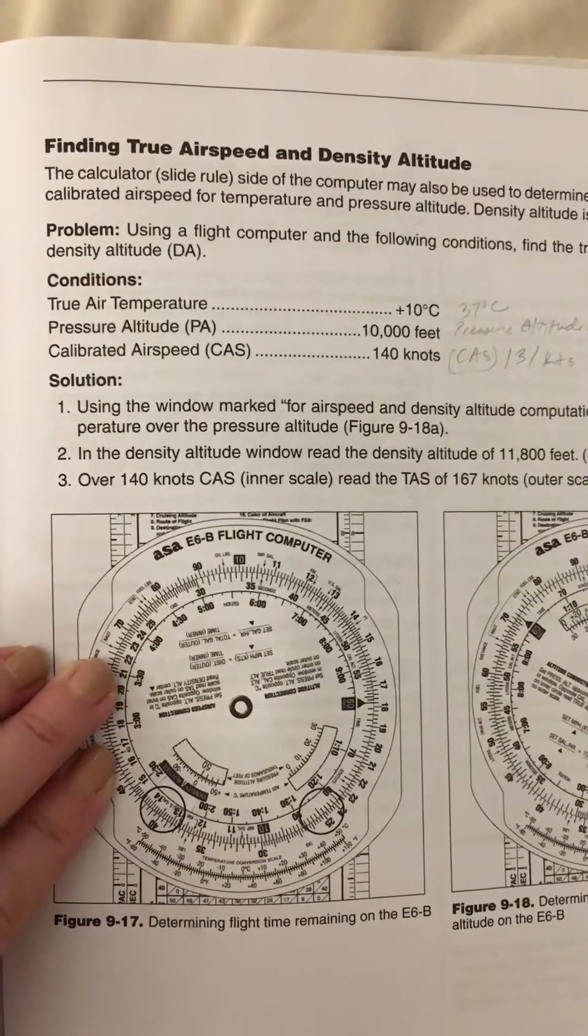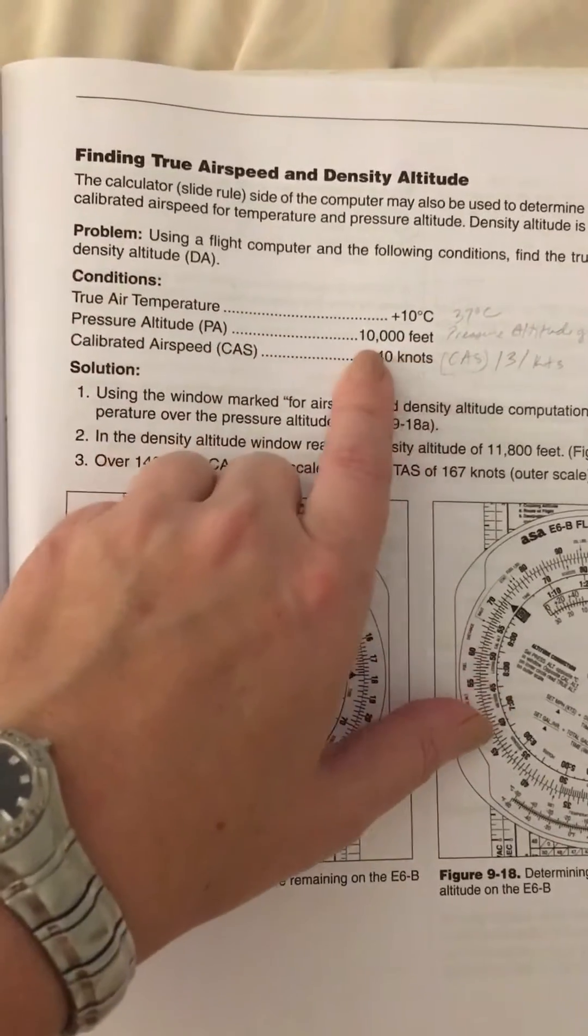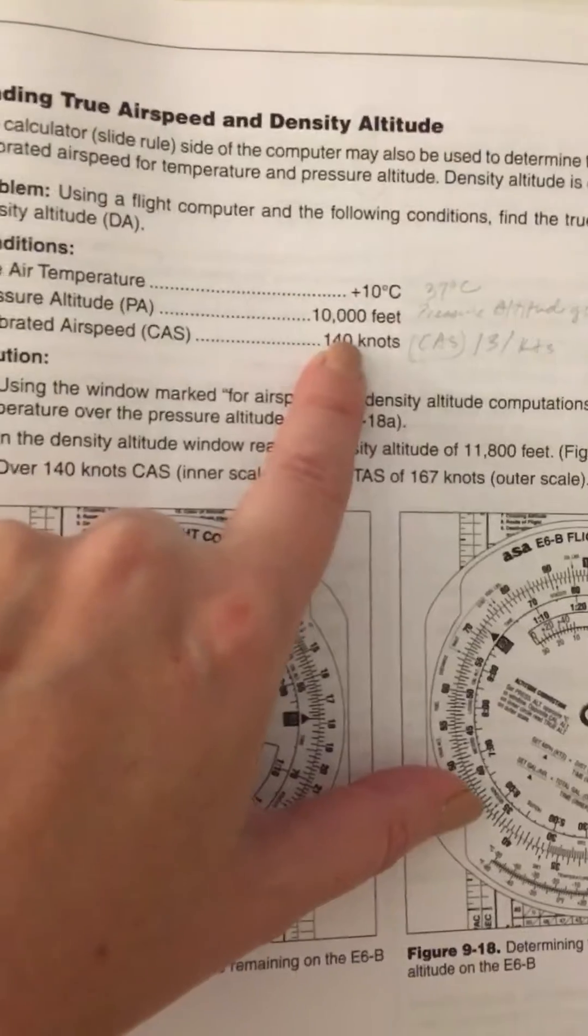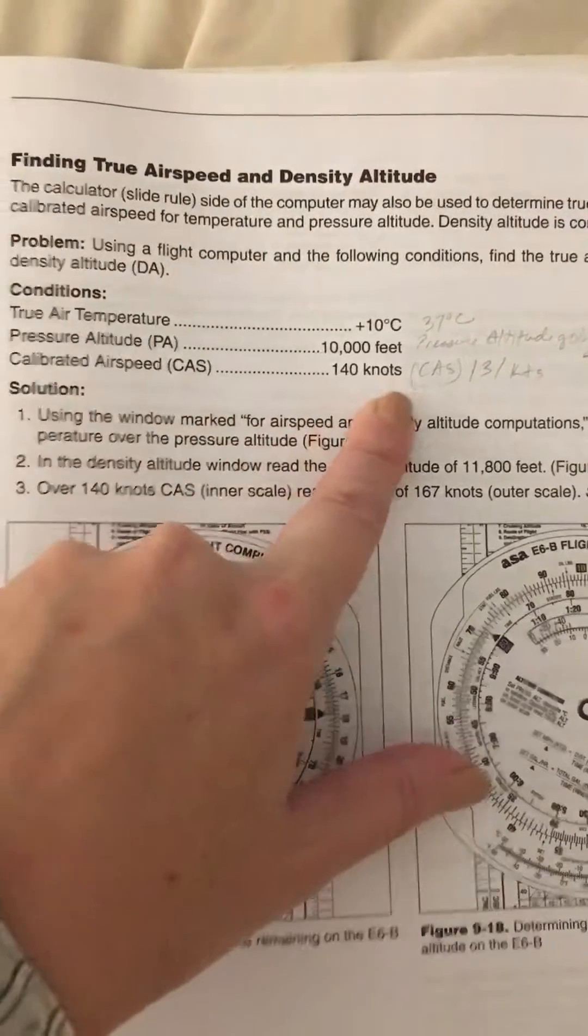Finding true airspeed and density altitude. Here we have 10 degrees Celsius, pressure altitude which they've given to us so we don't have to calculate it, and calibrated airspeed of 140 knots.